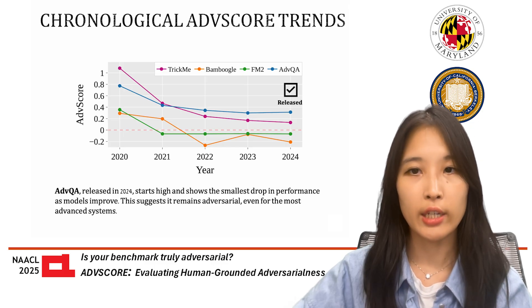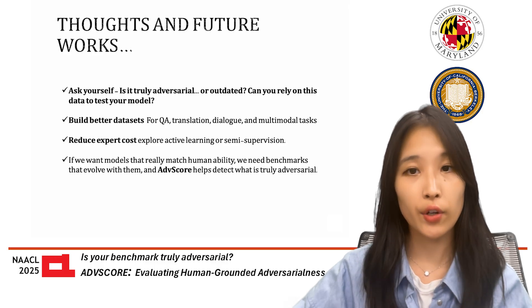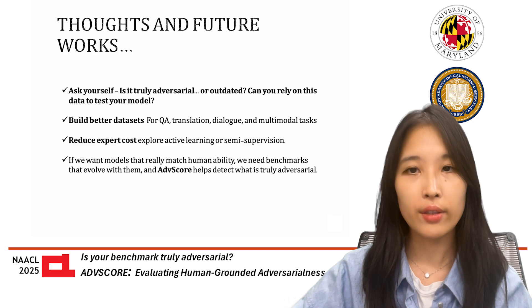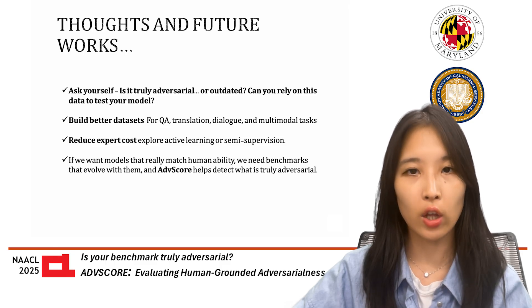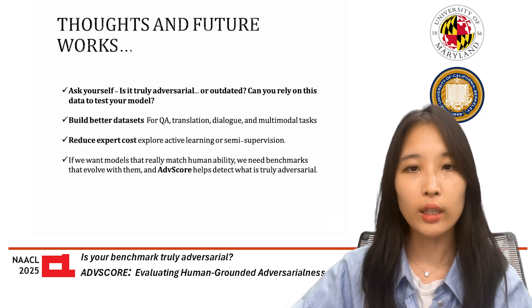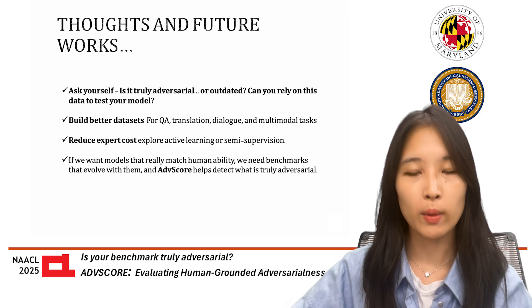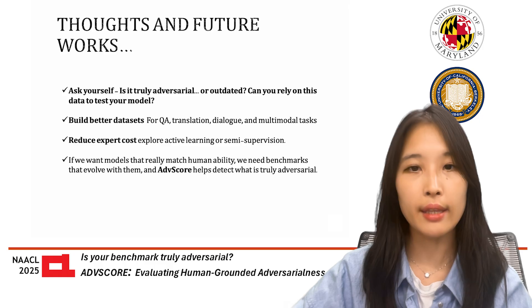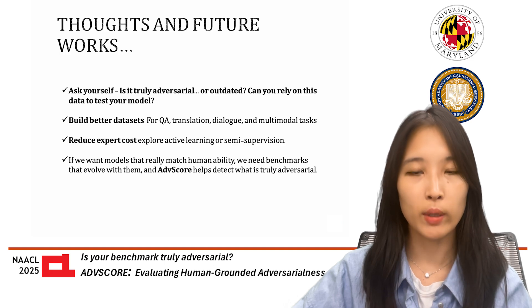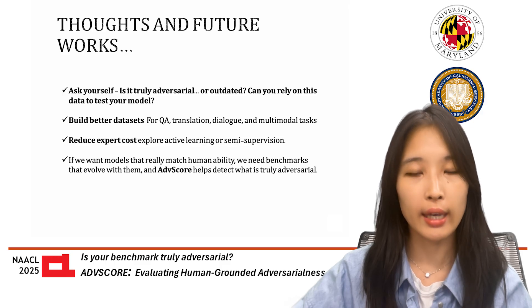So overall, as models grow more capable, most benchmarks become less challenging. ADB score can help diagnose when an adversarial evaluation dataset is getting stale. Next time you look at a shiny new benchmark, ask yourself: is it truly adversarial or outdated? Can you rely on this data to test your model? We think ADB score can help build better datasets — not just for QA, but for tasks like translation, dialogue, and multimodal reasoning. If we want models that really match human ability, we need benchmarks that evolve with them, and ADB score helps detect what is actually adversarial.